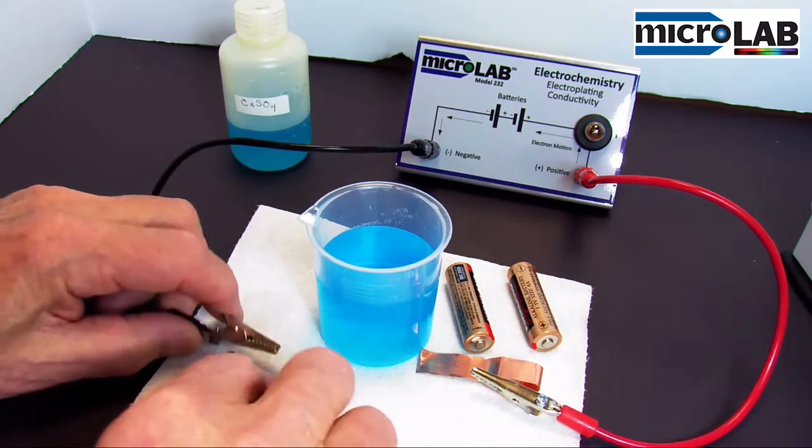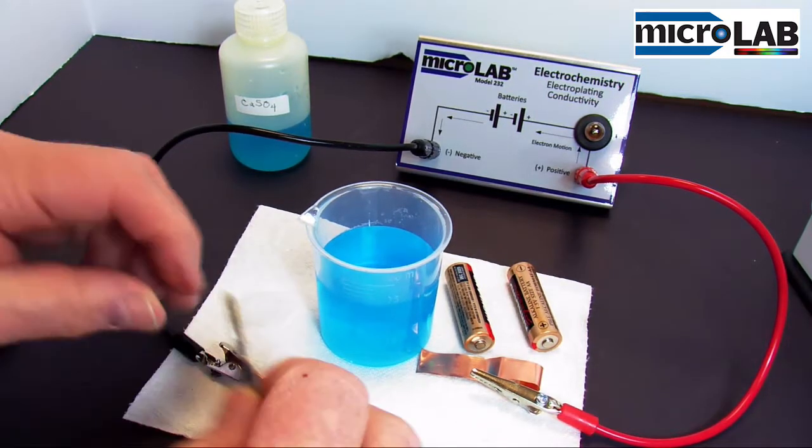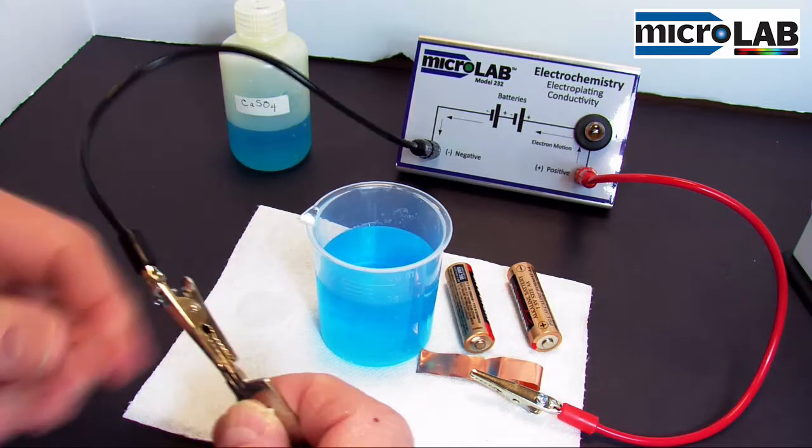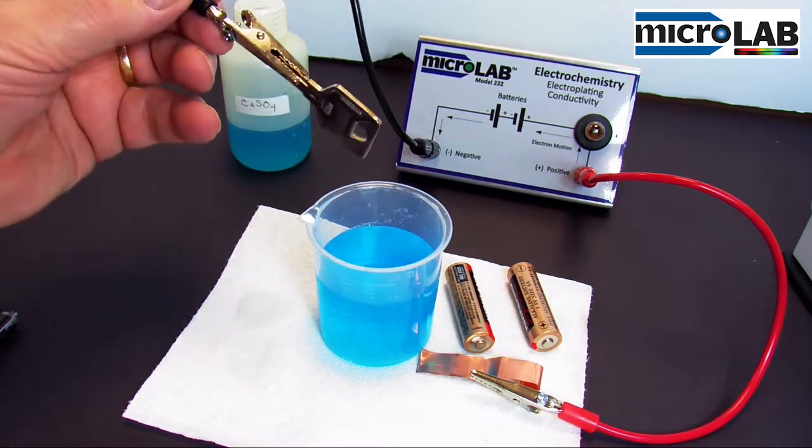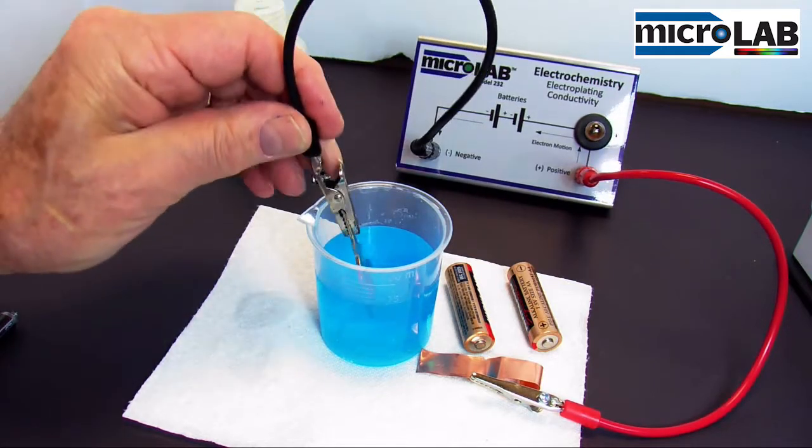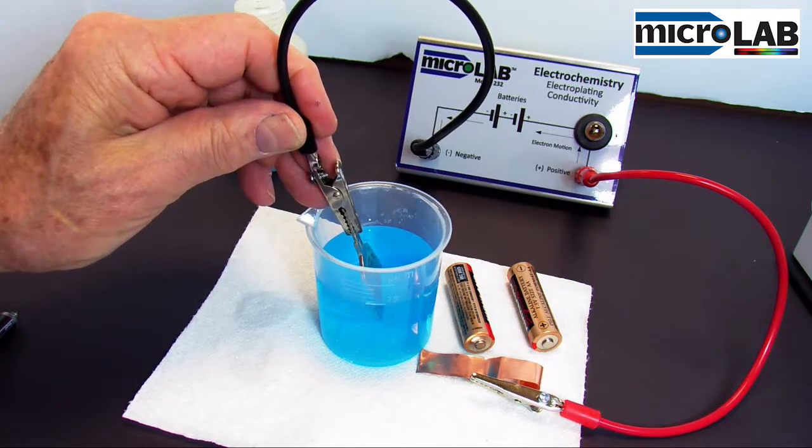Now let's take the key, and I'm going to connect it to this black lead, and the battery should force electrons out onto the key. I'll put it in the beaker for a little while, and let's see what happens.